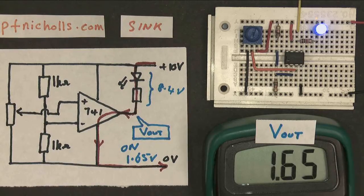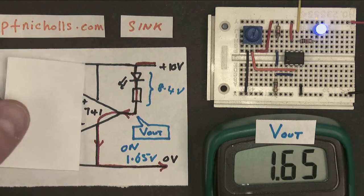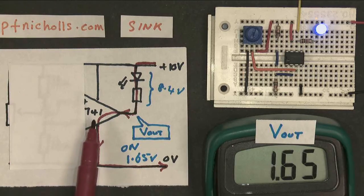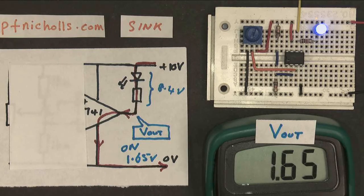And once again, it doesn't really matter what the electronics is at this side of the board. That's just an example. This could be a logic gate. It could be a counter. It could be a 555 chip. It could be anything at all. So that's what it means to have a current sink.